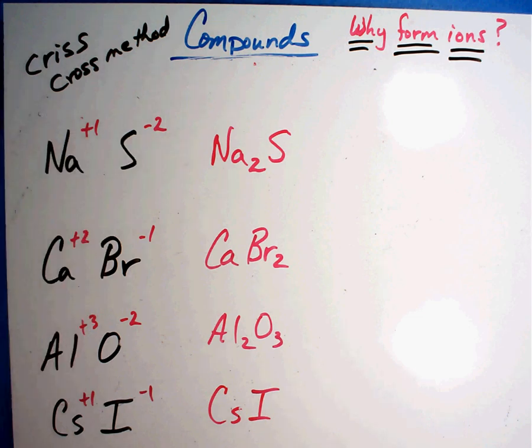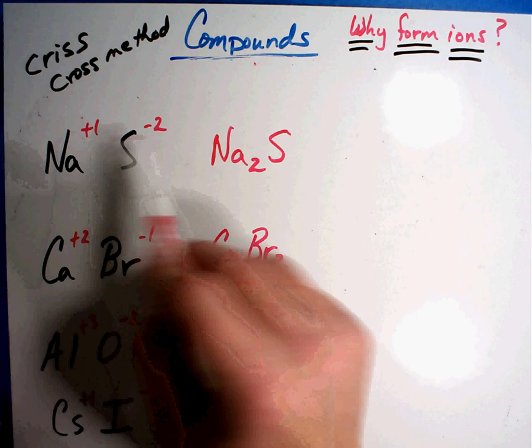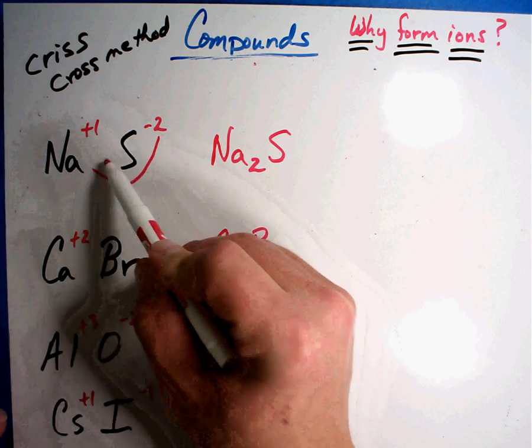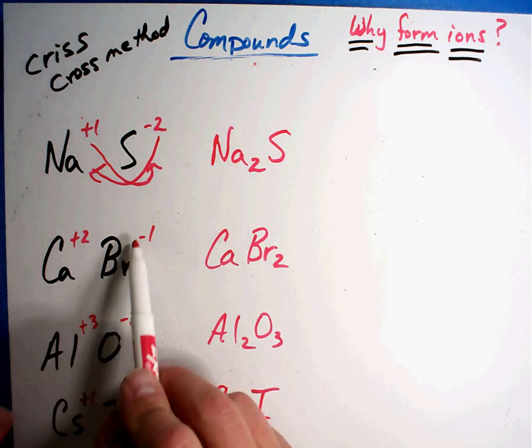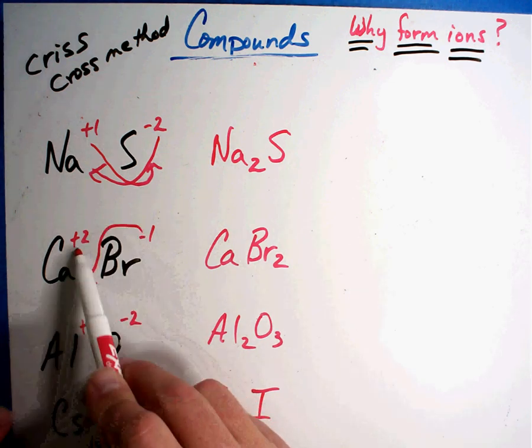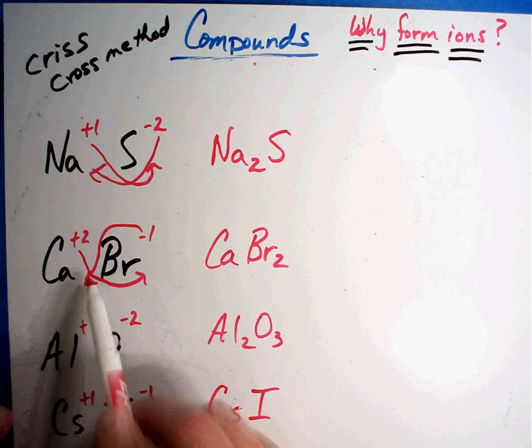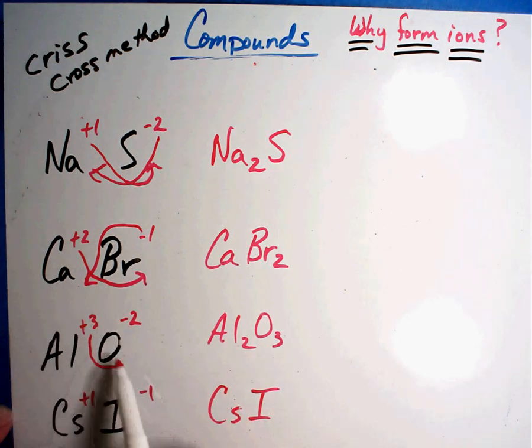Here's what the Criss Cross method is. If they do not equal zero, if you put this number here and this number here, it always works out. Take this number and this number - see how they're crossing in the middle? Put this number here and this number here, you get the right answer.